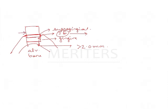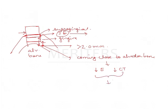But suppose you want to go deeper — if you want to place the margin lower because tooth structure is less — here you are reducing the junctional epithelium considerably and coming close to the alveolar bone. Because you are coming close to the alveolar bone, there is reduction in the epithelium, reduction in the connective tissue, and reduction in the biologic width.